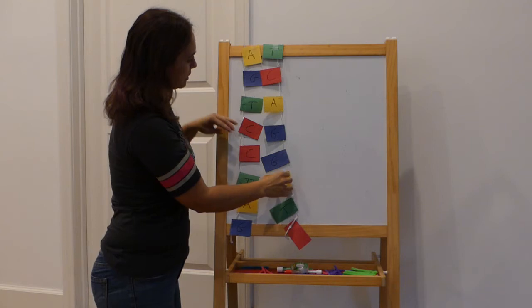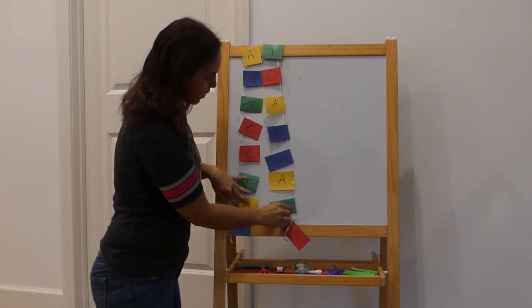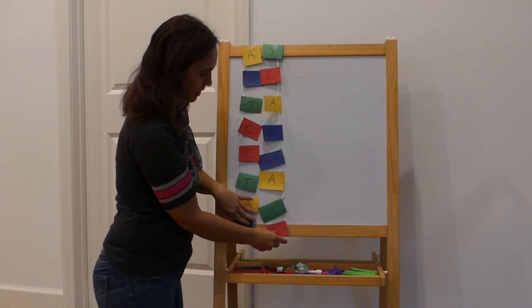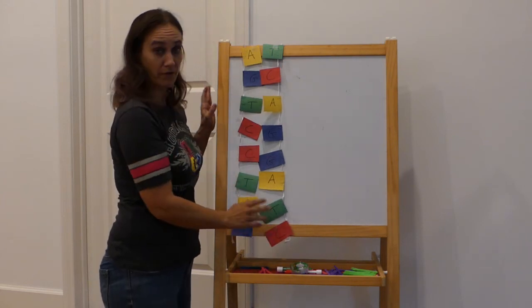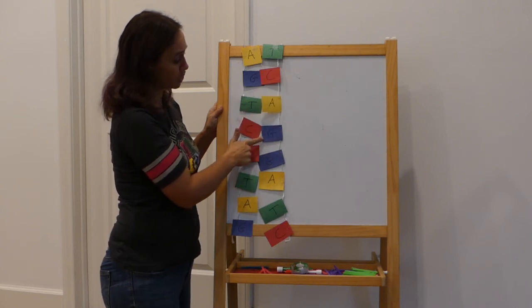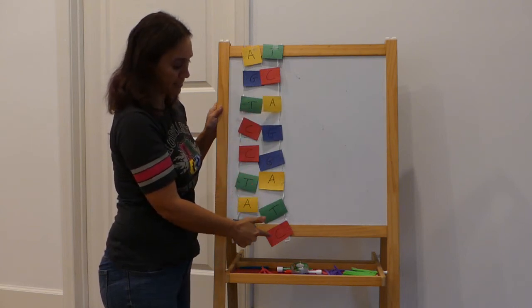So another strand coming across with the matching base pairs that we learned about last week. So you should have had on the other side T-C-A-G-G-A-T-C.